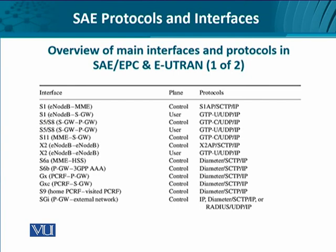Now let's look at the interfaces, starting from the S1 interface. That is the interface between an eNodeB — the base station defined in the 3GPP architecture for LTE and LTE-A — and the Mobility Management Entity, with regards to the control plane. For the user plane, the S1 interface is defined again between the eNodeB and the Serving Gateway, because the Mobility Management Entity does not carry user traffic.